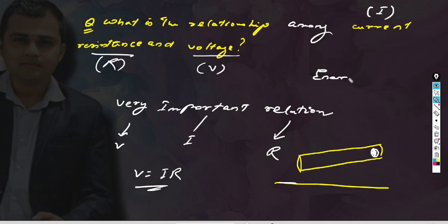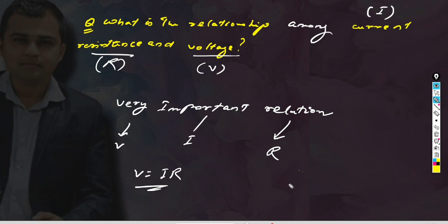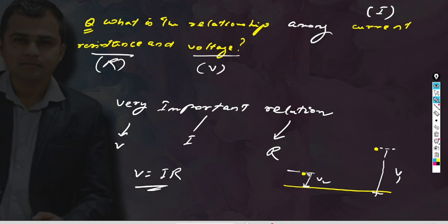Energy flows from a higher potential region to a lower potential region. That is why electricity also flows from higher potential region to lower potential region. The potential gap means the potential difference between two points, which is V1 minus V2. Potential difference means change in potential.